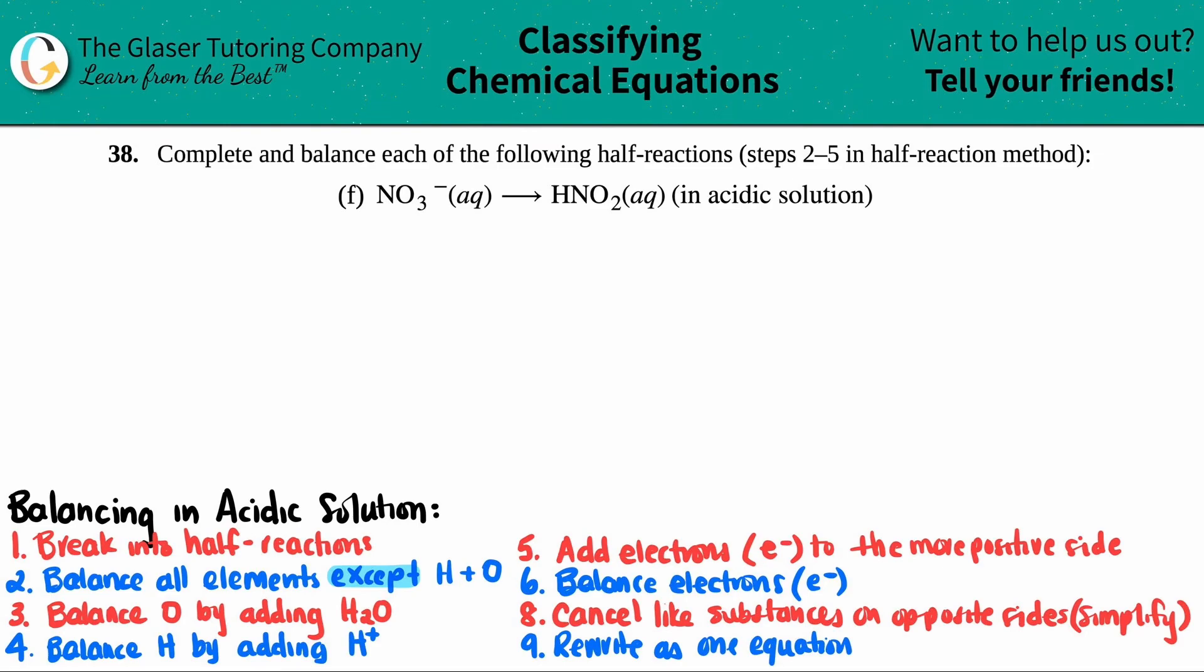Number 38, complete and balance each of the following half reactions. We have letter F. This is only steps two through five in our half-reaction method. We have to balance nitrate ion, NO3- aqueous, and this is turning into nitrous acid, HNO2 aqueous, and they tell us that we have to specifically balance this in an acidic solution.